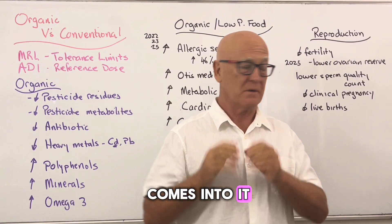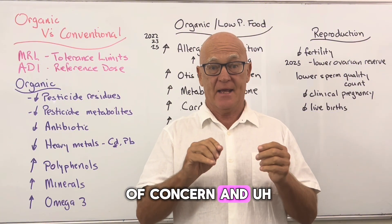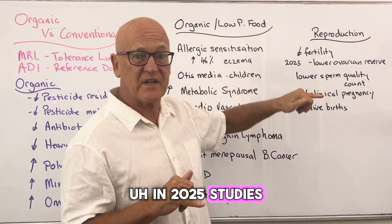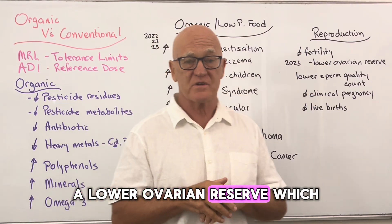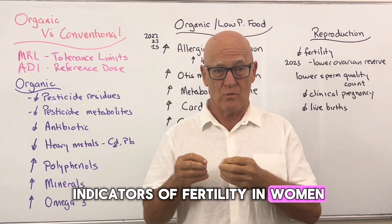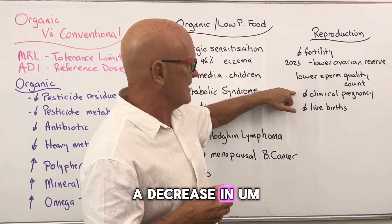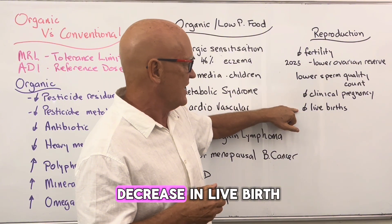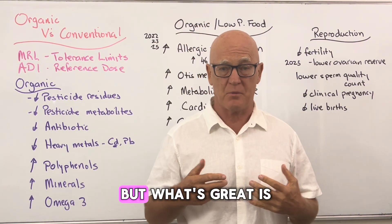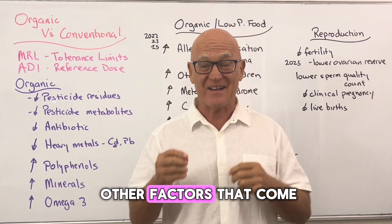Reproduction is an area of serious concern. Studies from 2025 consistently show a decrease in fertility, including lower ovarian reserve — a primary indicator of fertility in women — and lower sperm quality and count in men. There's also a decrease in clinical pregnancy rates and a decrease in live births, meaning an increase in pregnancy loss. Importantly, there are now studies showing what happens when people switch to organic, how long it takes, and other key factors — and those are really interesting findings.